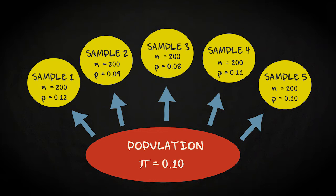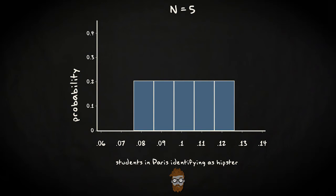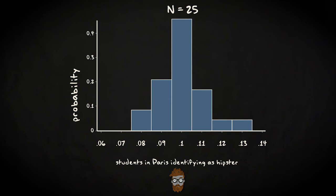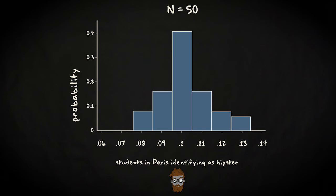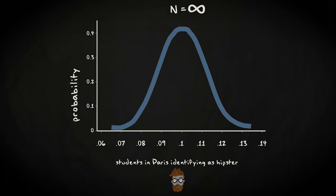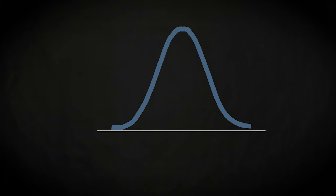If you would draw 5 samples, the sample proportions might look something like this. A histogram of these sample proportions would look like this — there are 5 values, and they all occur once, so they all have a probability of 0.2. Now, if you would draw 25 samples, the distribution would look something like this. And if you would draw 50 samples, something like this. And with an infinite number of samples, your distribution would look like this. This is the sampling distribution of the sample proportion, and the mean of this distribution will be 0.10, which equals the population proportion.